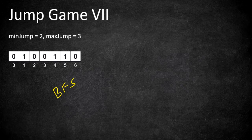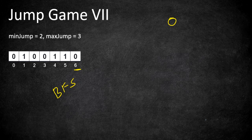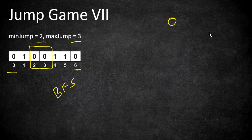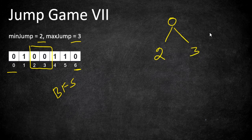To approach this, we perform a basic BFS to check whether we can reach the last index. Since the first position is always zero, we start from index 0. From zero, the minimum jump is 2 and the maximum jump is 3, so we can jump to both index 2 and index 3, both of which are zeros. So from 0 we add both index 2 and index 3 to our queue.